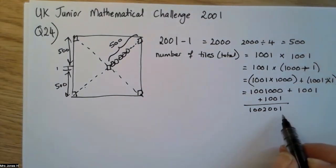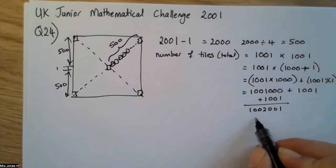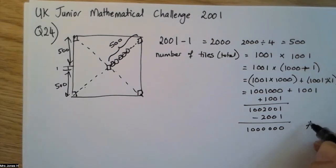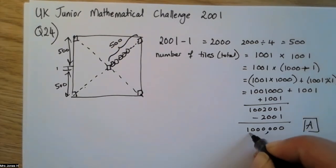We now need to take away the number of tiles that are blue, because we need the number that are red. 1,003,001 minus 2,001 equals 1,001,000. These are the red tiles.